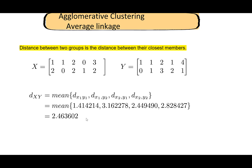Another type of agglomerative clustering method is average linkage. As the name suggests, we look at the average or mean of distances. For single linkage we had the minimum, for complete linkage we had the maximum, and for average linkage we use the mean. The distance between groups X and Y is the average of all pairwise Euclidean distances between their elements. This is slightly more tedious to calculate because the mean involves more decimal points and more calculations.